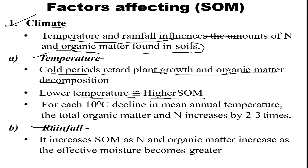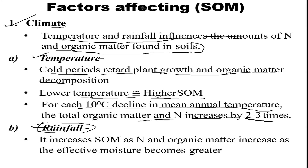Cold periods retard plant growth, and for each 10°C decline in mean annual temperature, total nitrogen increases by two to three times. Regarding rainfall under climate, soil organic matter and nitrogen content increase as the effect of moisture becomes greater — as rainfall increases, SOM and nitrogen content also increase.